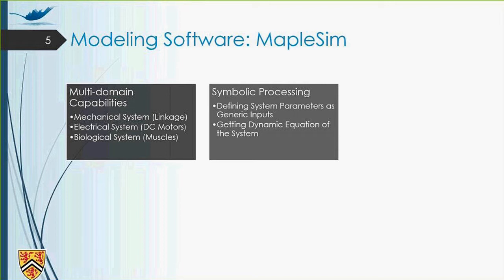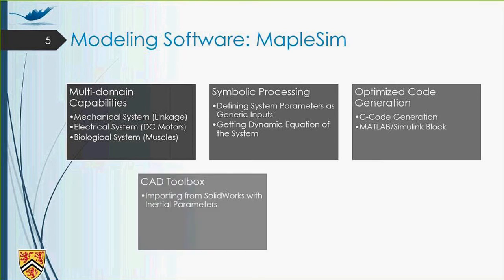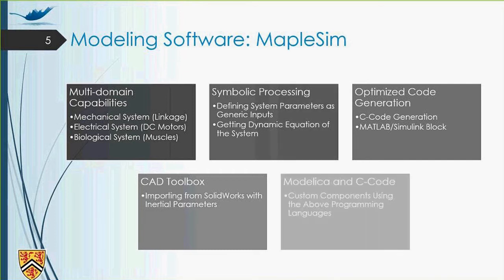It's possible to generate optimized codes. So it's possible to generate C codes out of the system or MATLAB Simulink block. The fourth reason is that it has CAD toolbox. It's possible to import any software assemblies inside the software and get the initial properties out of it. And finally, it has Modelica and C code embedded inside it. So we can generate custom components using C code and Modelica and implement it inside our MapleSim model. So as you see, there are really good reasons to select MapleSim as the targeted software.